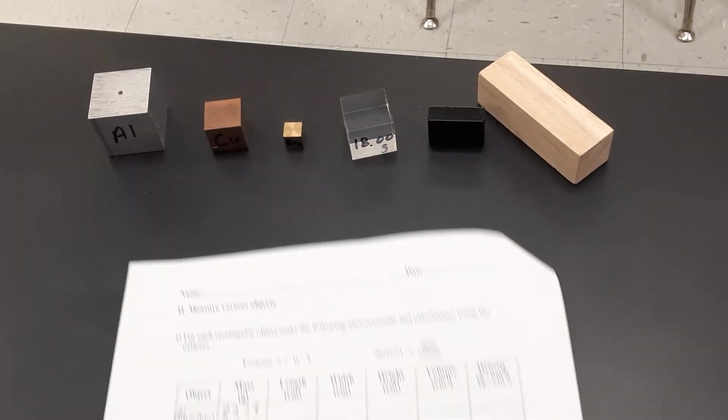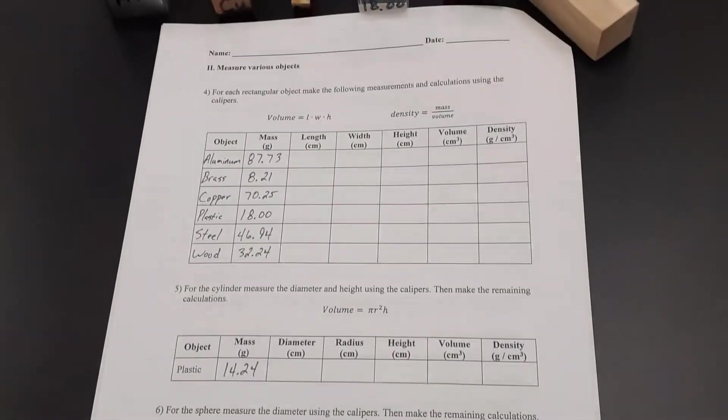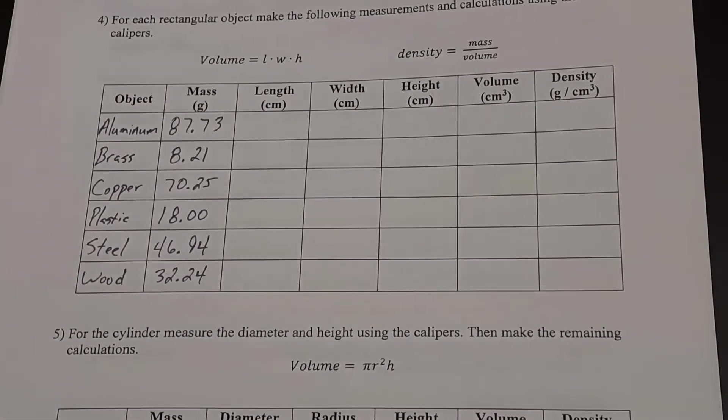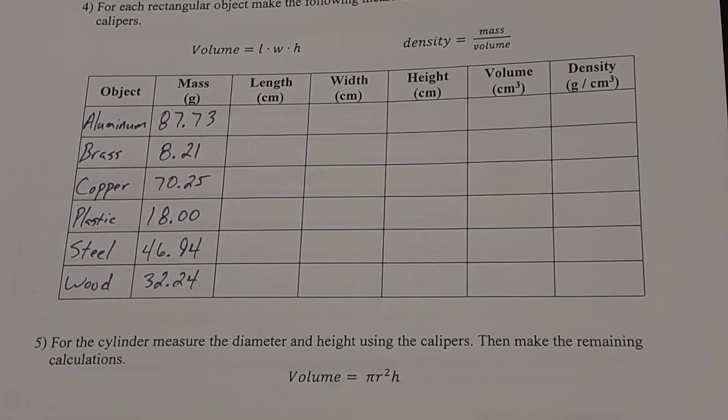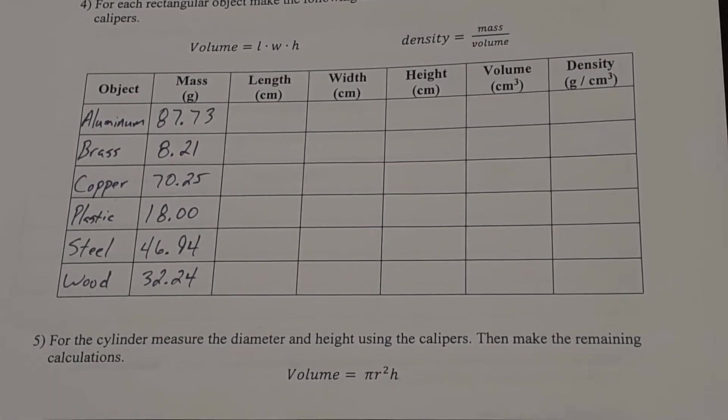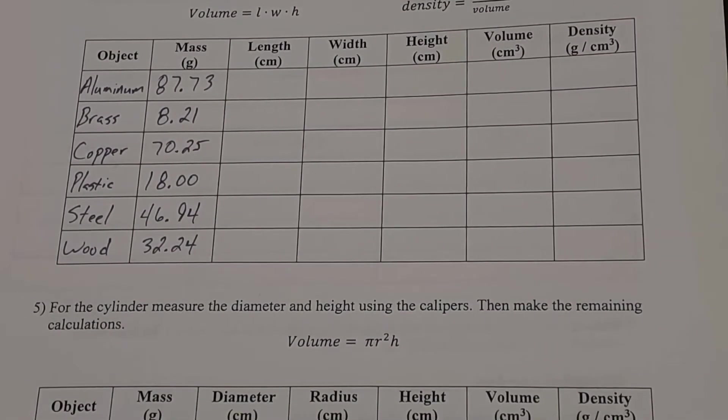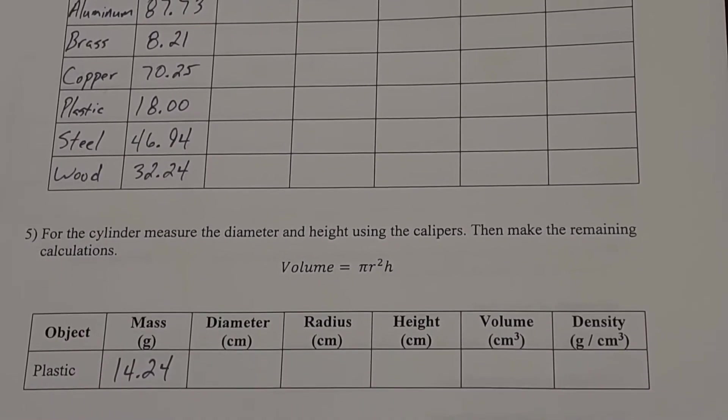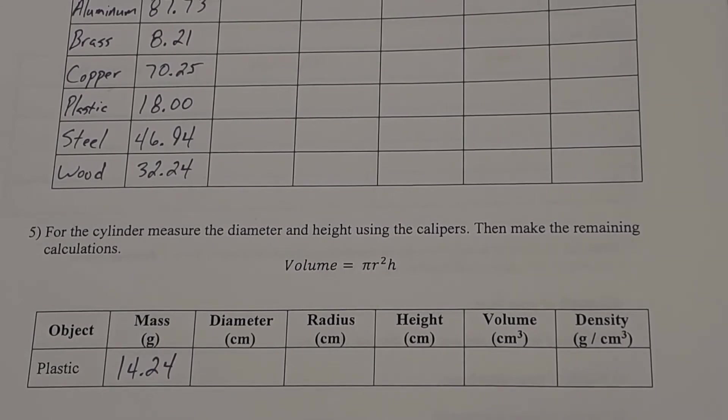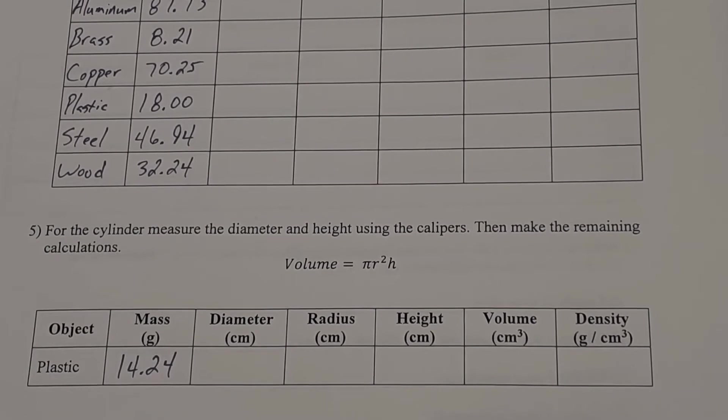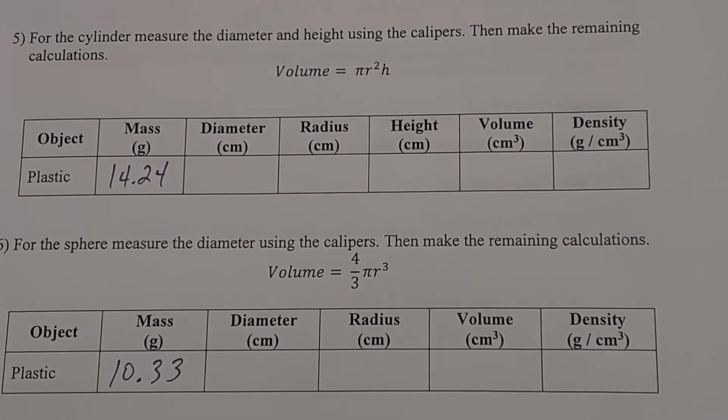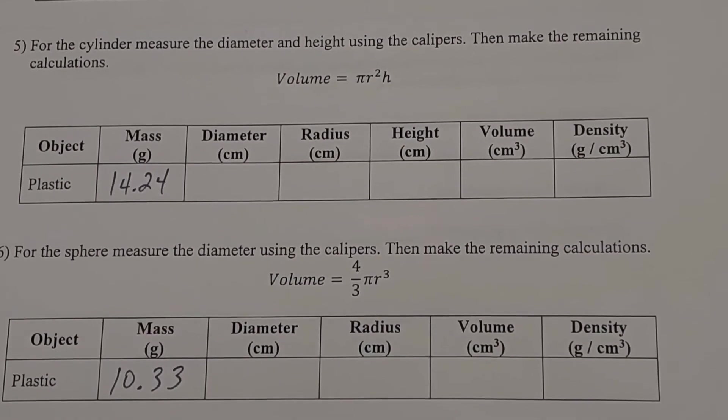The first thing I want to give you is the mass for each one of these objects. So right here, I've got them written out in order, you have the aluminum, the brass, copper, plastic, the steel, and the wood. And then I'm going to go ahead here and give you the masses for the other two objects, the cylinder and the sphere also. You can pause here to have a minute to write down those objects and their masses. The plastic cylinder has a mass of 14.24 grams, and then the plastic cube is 10.33 grams of mass.